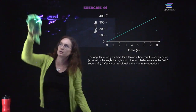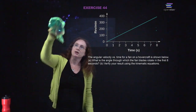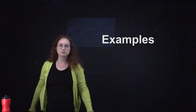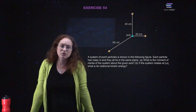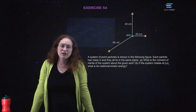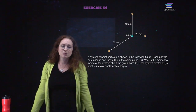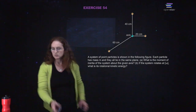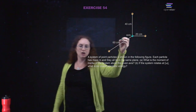So here you can take the kinematic equations that you're hopefully comfortable with by now — the ones for describing projectile motion — and they work for angular acceleration as well. We move on to more examples: a system of particles is shown in the following figure, each particle has mass m and they all lie in the same plane. What is the moment of inertia of the system about the given axis? We're going to draw our coordinate system.